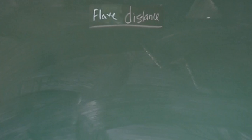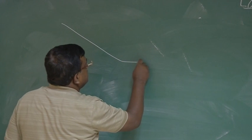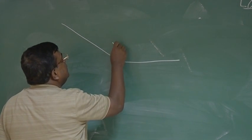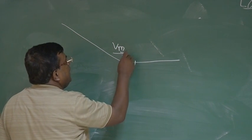Welcome back students. Now, our next step will be to calculate the flare distance. If we draw the diagram again, it is something like this. This is the V touchdown. Here is the flare.